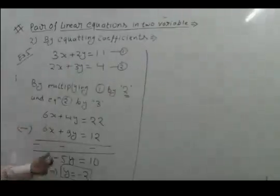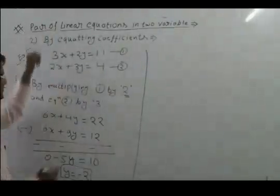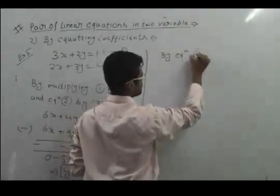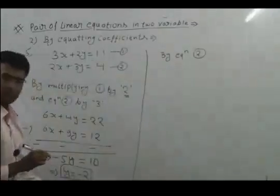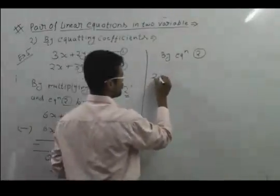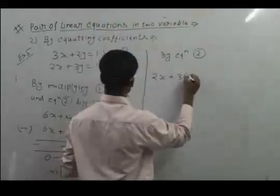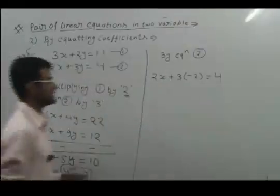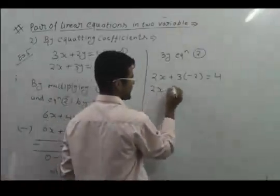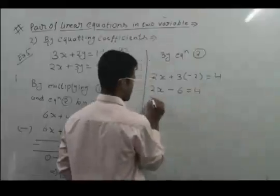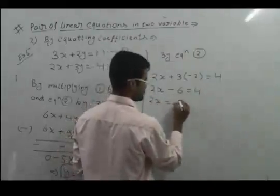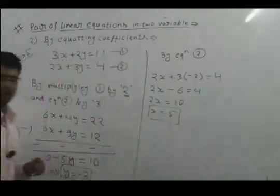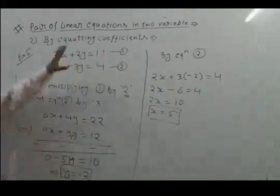Now put y equals minus 2 into any equation — you can use either one to find the value of x. Putting y equals minus 2 in equation number 2: 2x plus 3 times minus 2 equals 4, so 2x minus 6 equals 4, therefore 2x equals 10, and x equals 5. This is the solution of the pair of linear equations: x equals 5 and y equals minus 2.